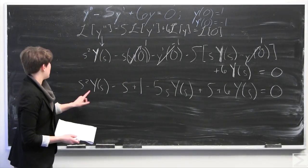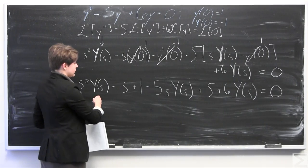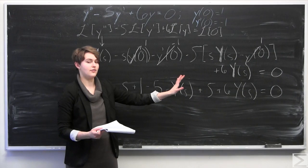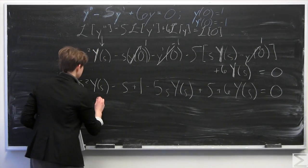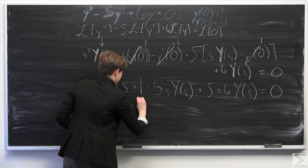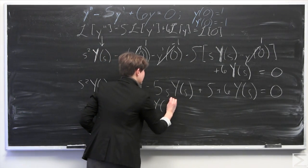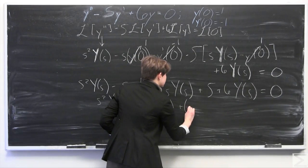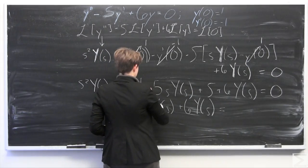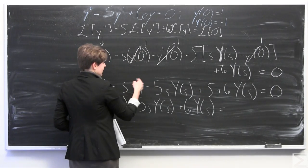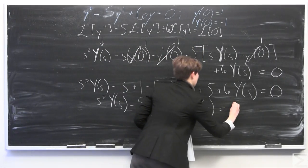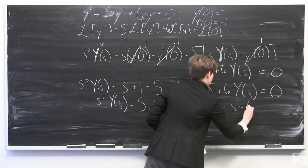Now I'm going to collect together all of the terms that have a big Y(s) in them and leave them on the left side, then move all other terms without a big Y(s) over to the right-hand side. So we're left with s squared times big Y(s), minus 5s times Y(s), plus 6 times Y(s), equals negative s plus 6 brought over to the other side, giving us positive s minus 6.